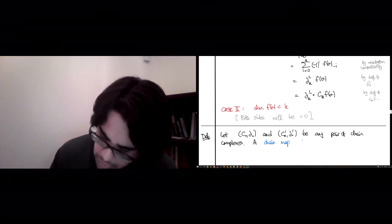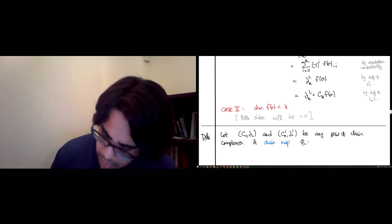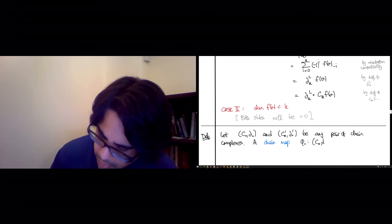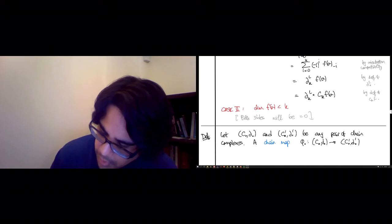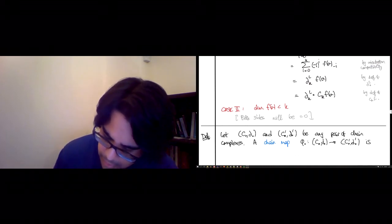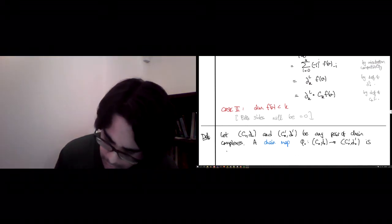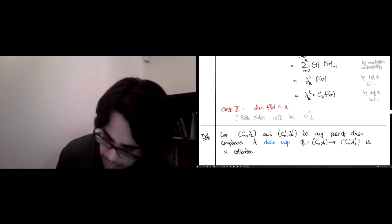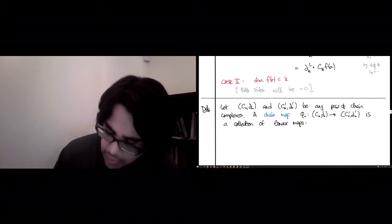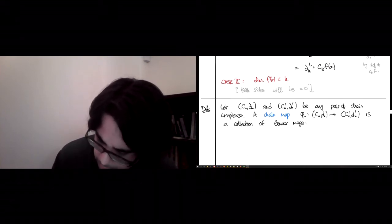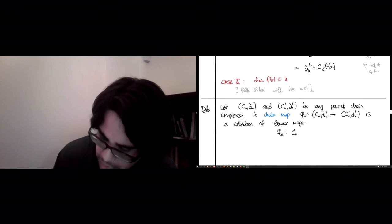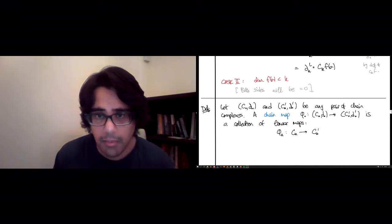A chain map, so this is going to be a notion of a function that takes one chain complex to another, which we'll call φ from C to C', is a collection of linear maps.